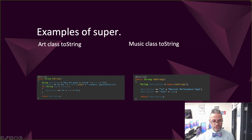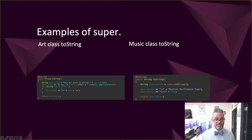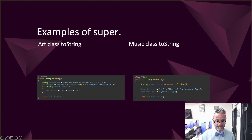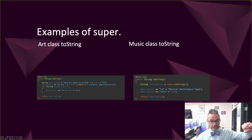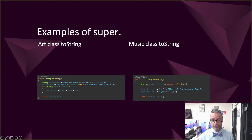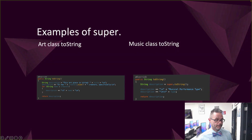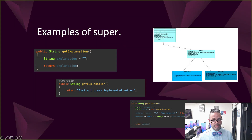For example, in the Art class's toString() — which is overriding Object's toString — we build a string that says 'This art piece is: [title]' and then lists each name in the creators list. In the Music class's toString(), we call super.toString() on Performance to get the description, then append the musical performance type information to it. So we call the parent's toString, get the result, and add to it.